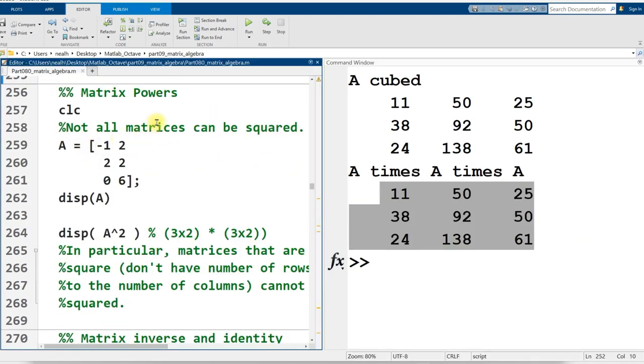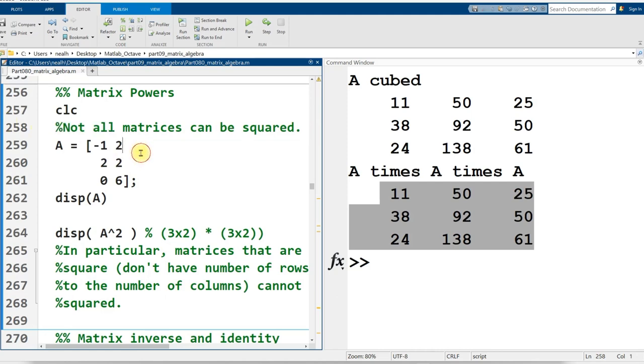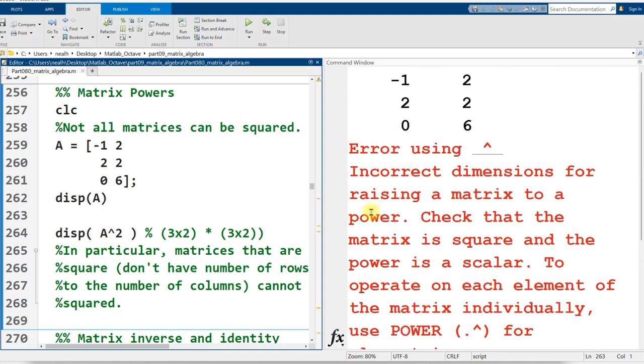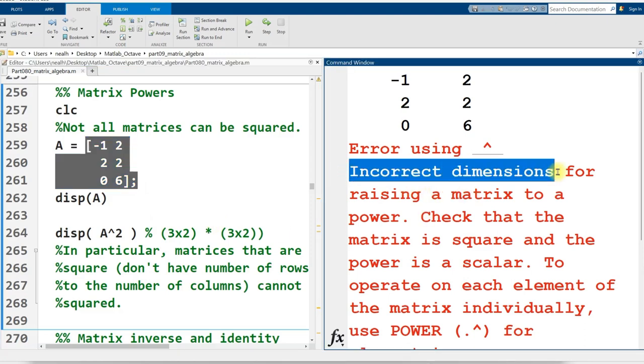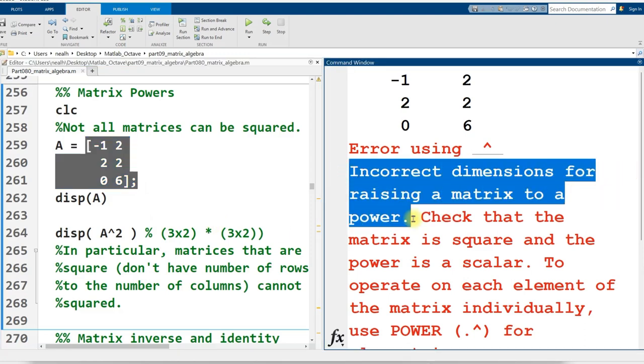Not all matrices can be squared. In fact, the word square gives you a really big hint. A matrix has to have the same number of rows as it has columns in order to be squared or raised to any other power. So here I try to square this matrix that is not square, it's rectangular with three rows and two columns and that simply does not work. Incorrect dimensions for raising a matrix to a power.